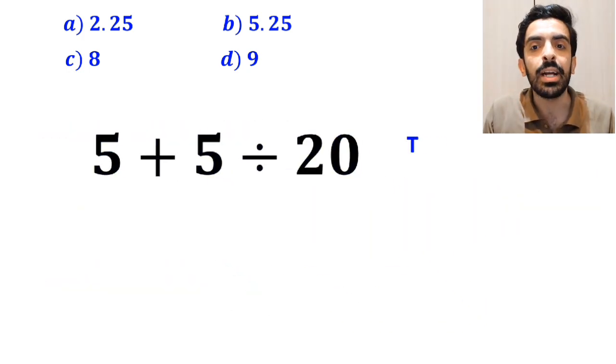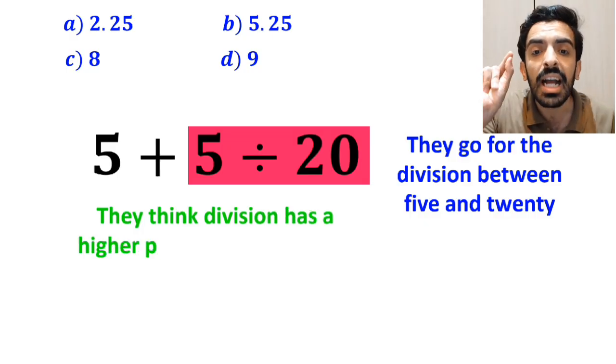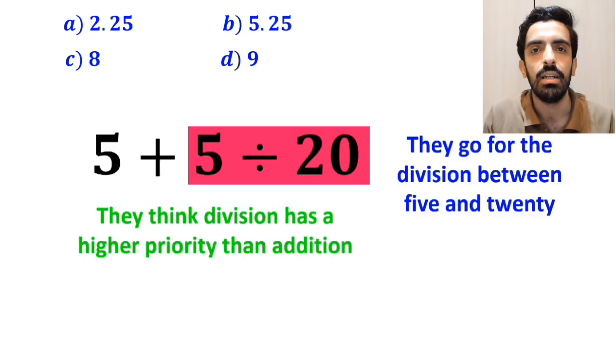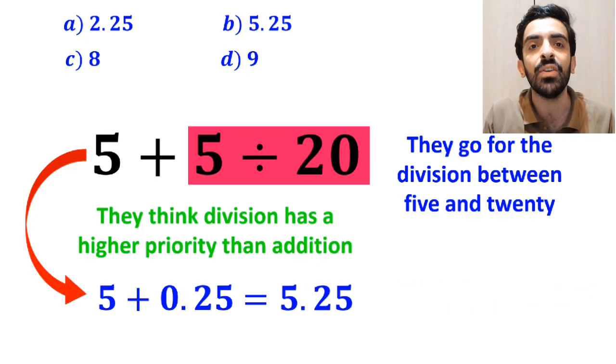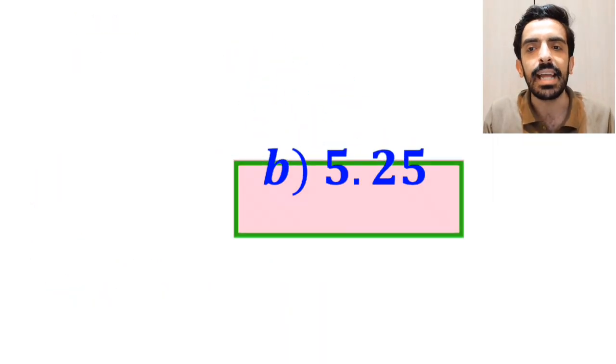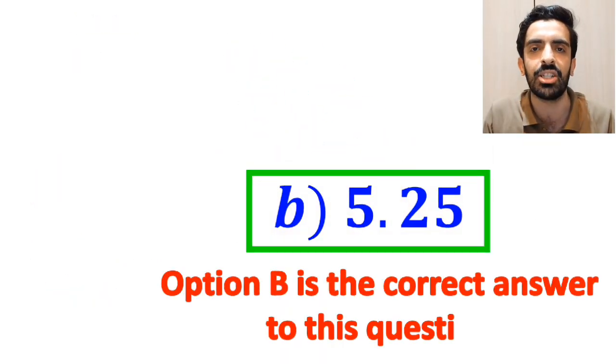Then, they go for the division between 5 and 20 because they think division has a higher priority than addition. And they rewrite this expression as 5 plus 0.25 which ultimately gives them the answer 5.25. And immediately, they conclude that option B is the correct answer to this question.